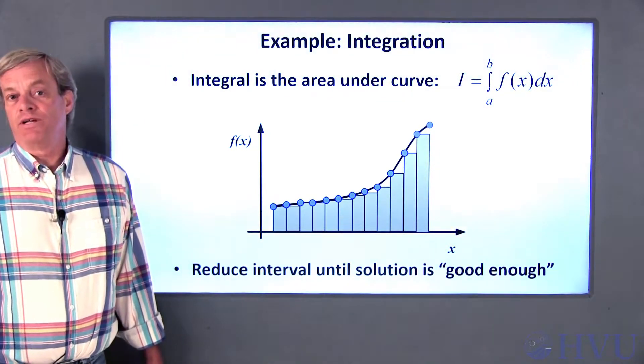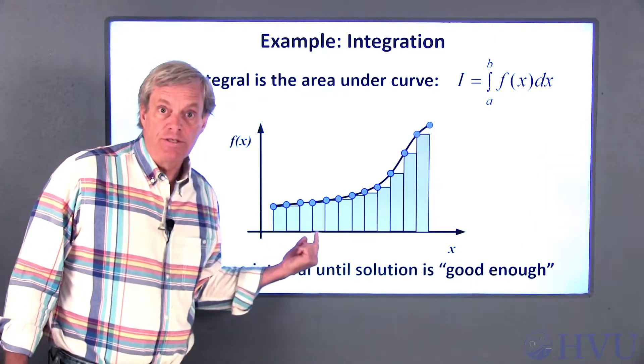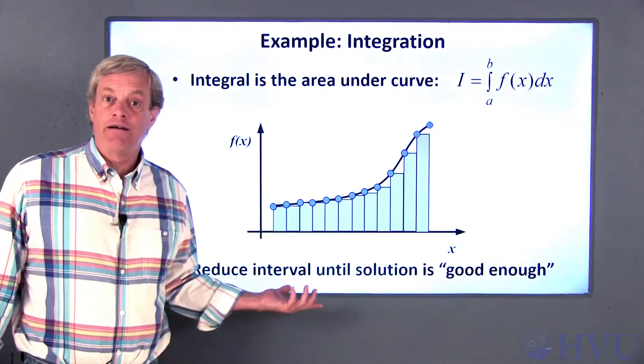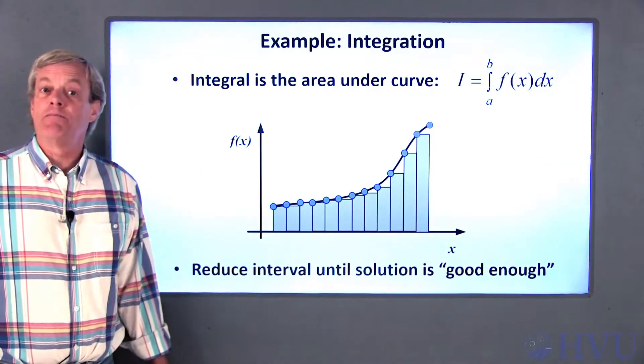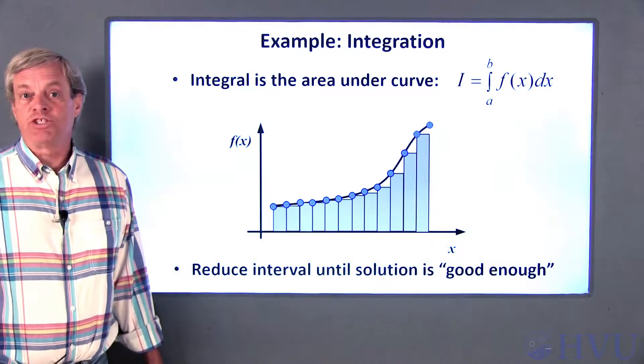Again, we are doing a series of pretty simple calculations. We just choose the values at the edges of the intervals, use those values to find the areas of the rectangles, and then sum up the individual areas. Keep repeating the process until the area stops changing.